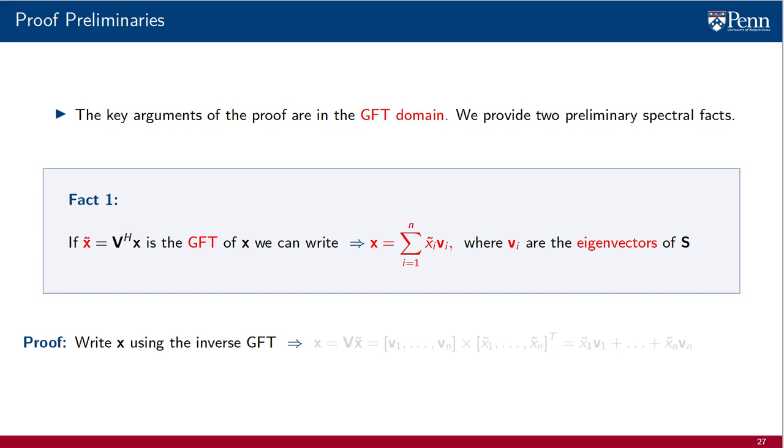This fact is just an alternative way of writing the inverse GFT. Indeed, write the IGFT as V times x̃. And notice that the columns of the matrix V are the eigenvectors vᵢ, and that the rows of x̃ are the entries of the GFT. We can then expand the product to obtain the sum of x̃ᵢ times vᵢ over eigenvector indexes.